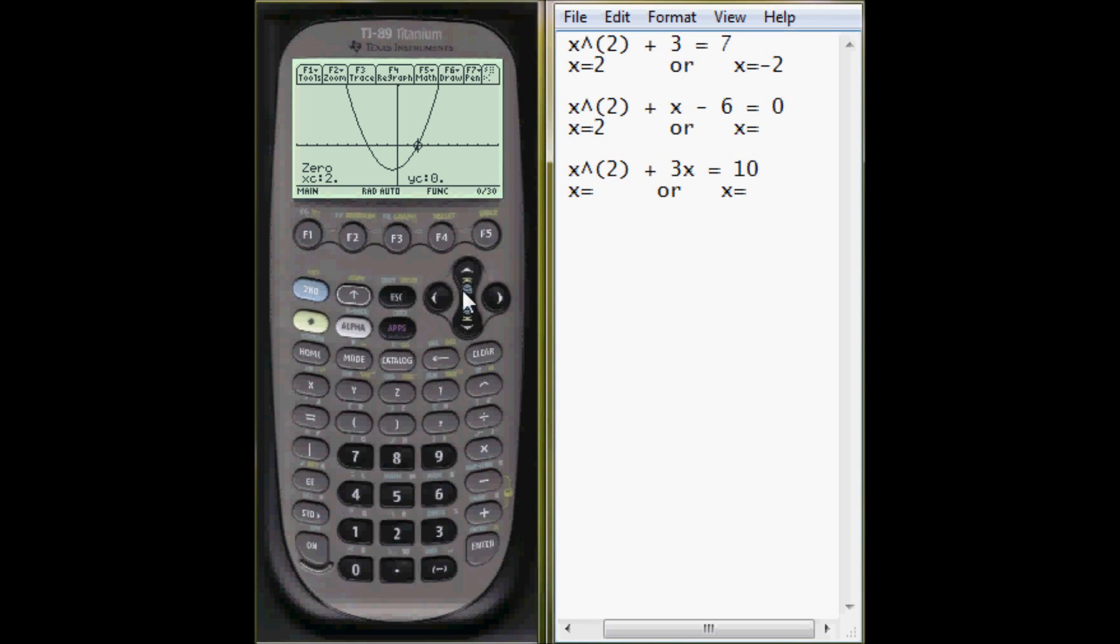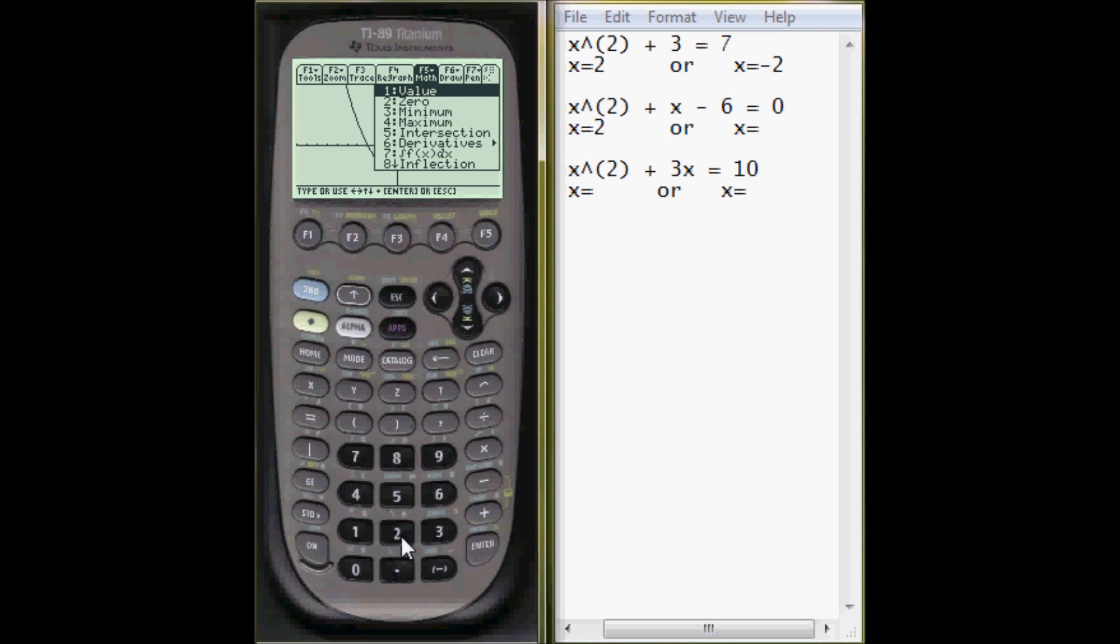Now, let's do the same thing for the other zero. Press 2. Lower bound. This time, we need to go significantly more to the left. 1, 2, 3, 4, 5. I'll do negative 5 to be safe.